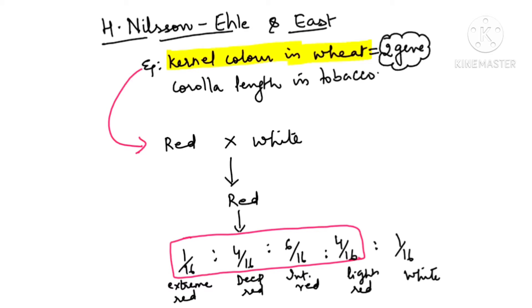When a character is controlled by two genes, your ratio comes out as 1:4:6:4:1. Now we are going to study human skin color and see what phenotype ratio we will get in F2 generation.